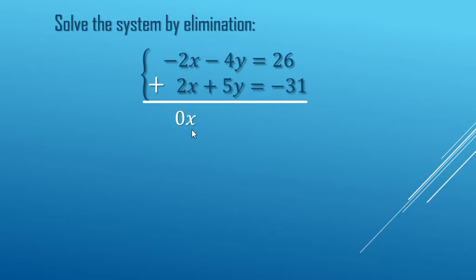Negative 2x plus 2x, zero x's. Negative 4y plus 5y, 1y. 26 minus 31 is negative 5. So here the x's, there's zero of them. They've been eliminated, leaving us with y equals negative 5.